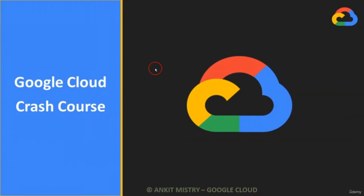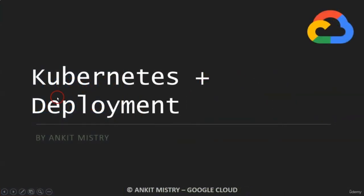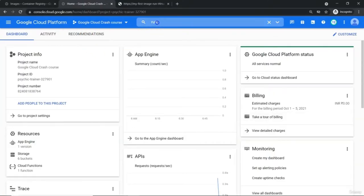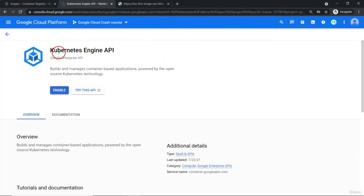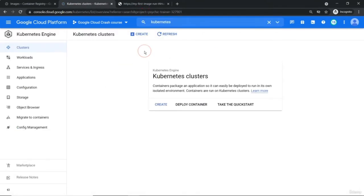In this video, we are going to deploy the same Docker images to the Kubernetes cluster. There are three step processes: first, we need to create a Kubernetes cluster; next, we are going to deploy this app; but even after deployment, you just cannot use it — you need to expose it. The last step will be to expose your workload as a service. Let's see all three steps in action. For that, let's go to Kubernetes. First, you need to enable the Kubernetes Engine API.